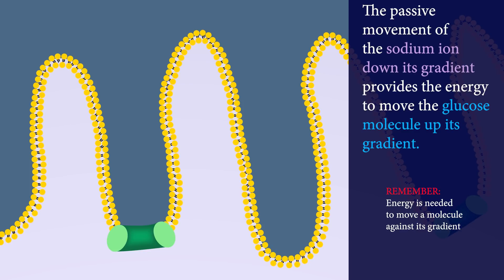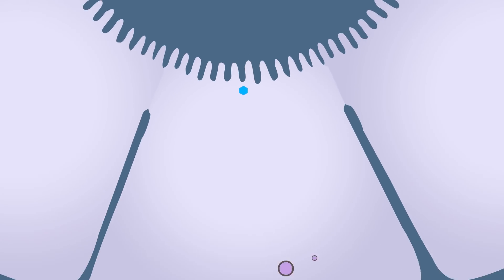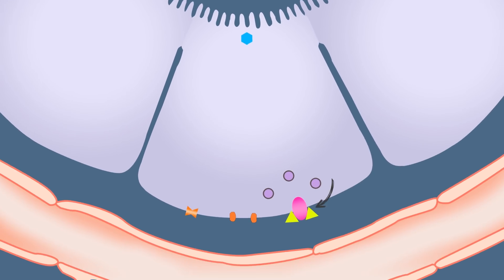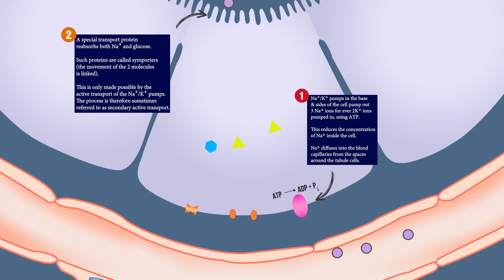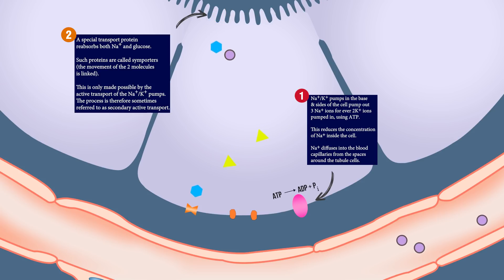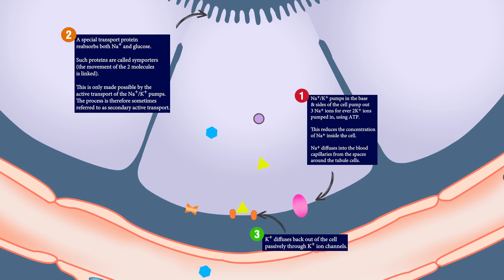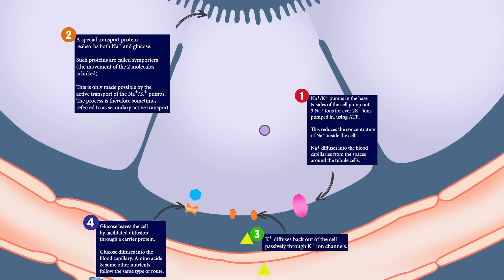This is called co-transport of sodium and glucose. The passive movement of the sodium ion down its gradient provides the energy to move the glucose molecule up its gradient. So, indirectly, the active transport of sodium ions out of one side of the cell provides the energy needed to transport glucose molecules into the other side. In this way, all of the glucose in the proximal convoluted tubule is reabsorbed into the blood.